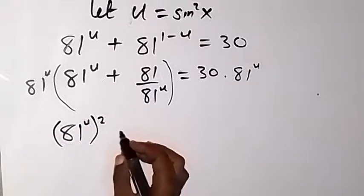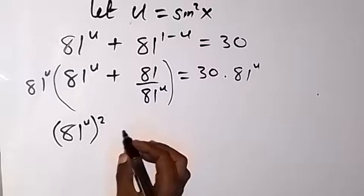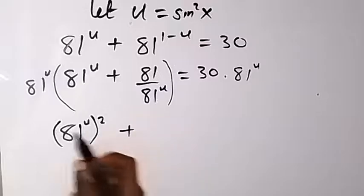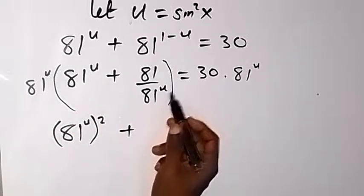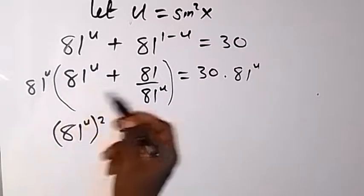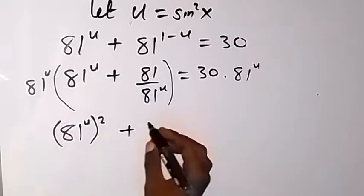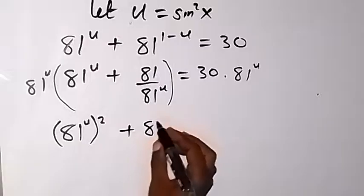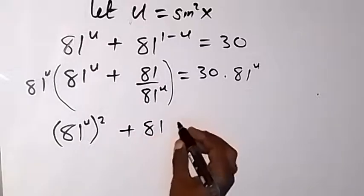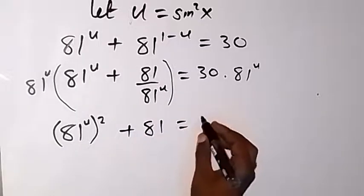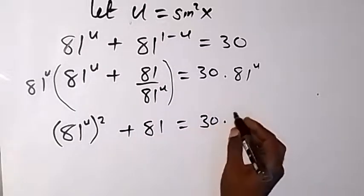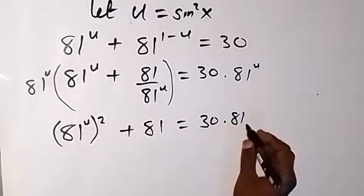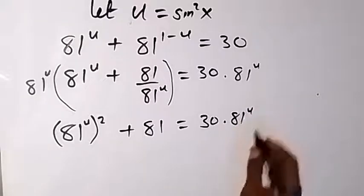The 81^u in the numerator and denominator cancel each other, so that becomes plus 81, giving us 81 equals 30 multiplied by 81^u.